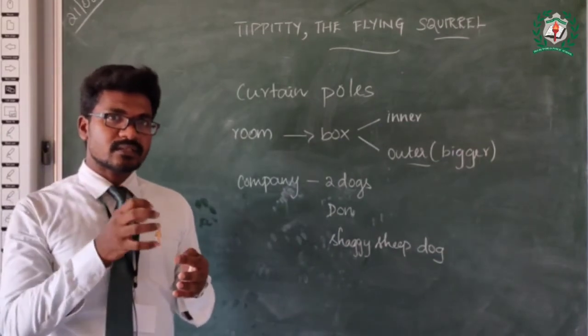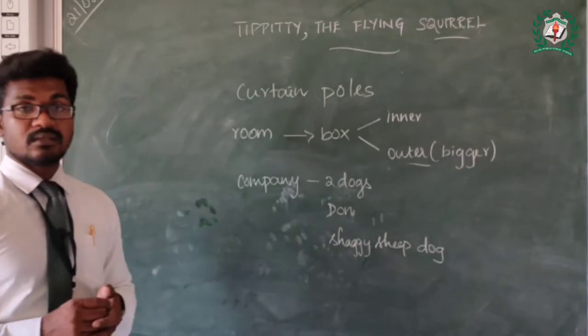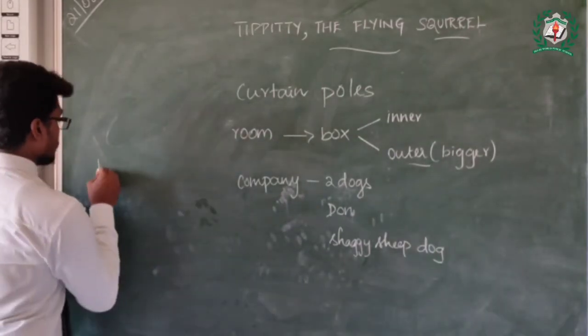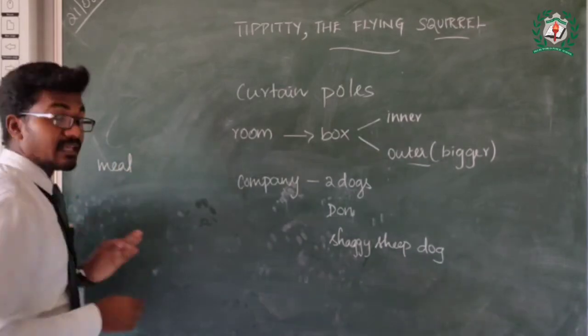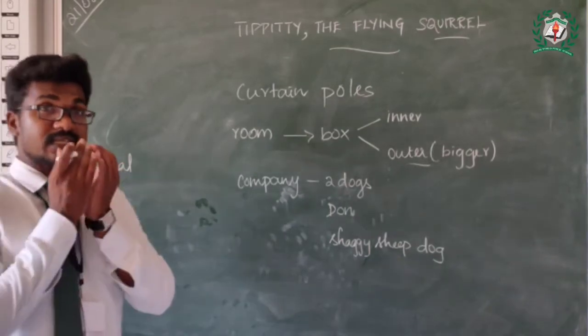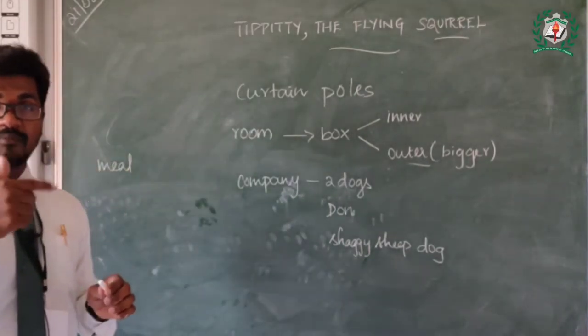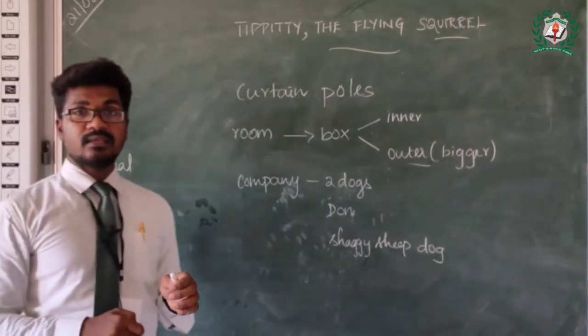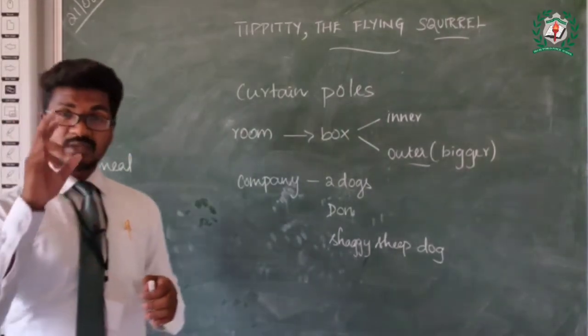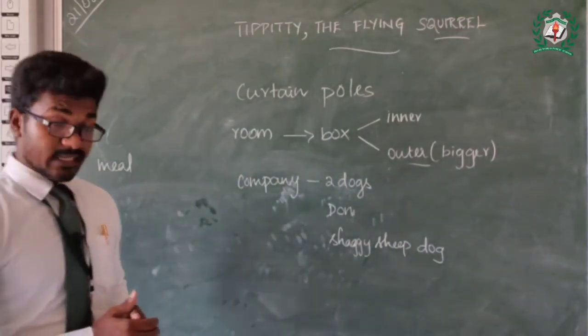They were companions. And when we talk about its food, it liked custard so much. And obviously it likes the nuts. Within 10 minutes it can make a hole in the nuts and eat it. Such type of strong teeth it has because it is a rodent.